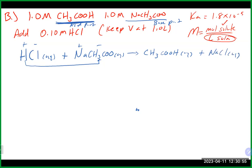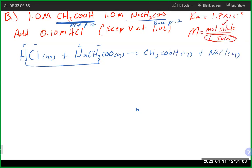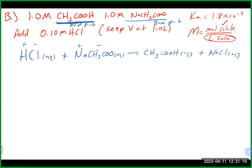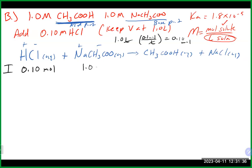To illustrate buffer capacity limits: take the same 1 M acetic acid and 1 M sodium acetate buffer, but this time suppose you accidentally grabbed 18 M HCl instead of 0.1 M and added 1 liter of it — that's 18 moles of HCl added. We only have 1 mole of sodium acetate. The sodium acetate is the limiting reagent. We don't have nearly enough sodium acetate to handle all that acid, and the buffer would be completely overwhelmed.